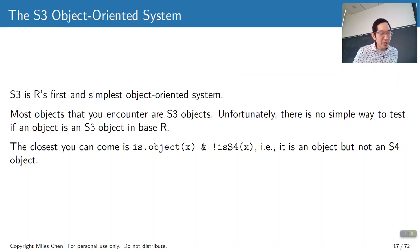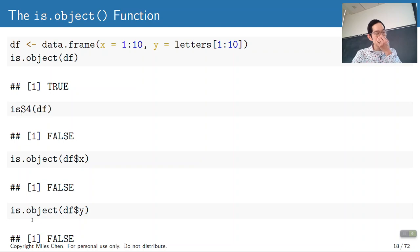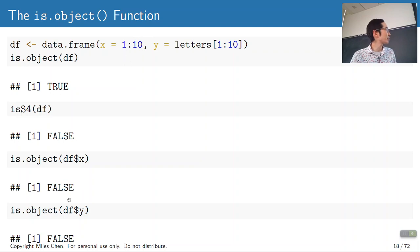Let's talk about the S3 system. To see if something is S3, we don't have a direct function. We can ask is.object() — if S3, it'll say true. There is is.S4(), and if that returns false, then it's going to be S3. So if is.object() is true and is.S4() is false, it will be S3. For example: a data frame — is.object() is true, is.S4() is false. Column X as an integer vector — is.object() is false.